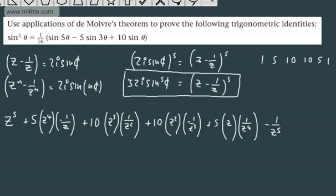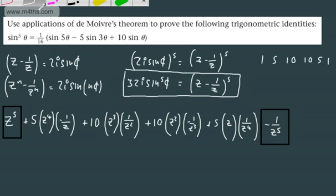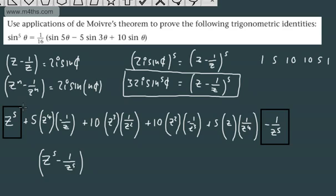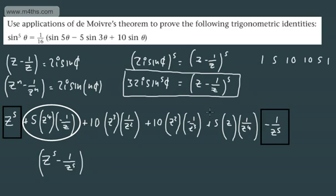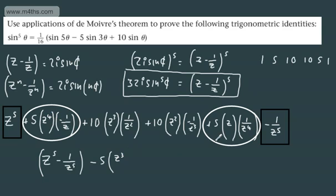What I'm now going to do is collect these terms up. First, z to the fifth and negative 1 over z to the fifth can be rewritten as z to the fifth minus 1 over z to the fifth. Then for the next pair: 5z to the fourth times negative 1 over z and plus 5z times 1 over z to the fourth — pulling out a common factor of minus 5 leaves z cubed minus 1 over z cubed.